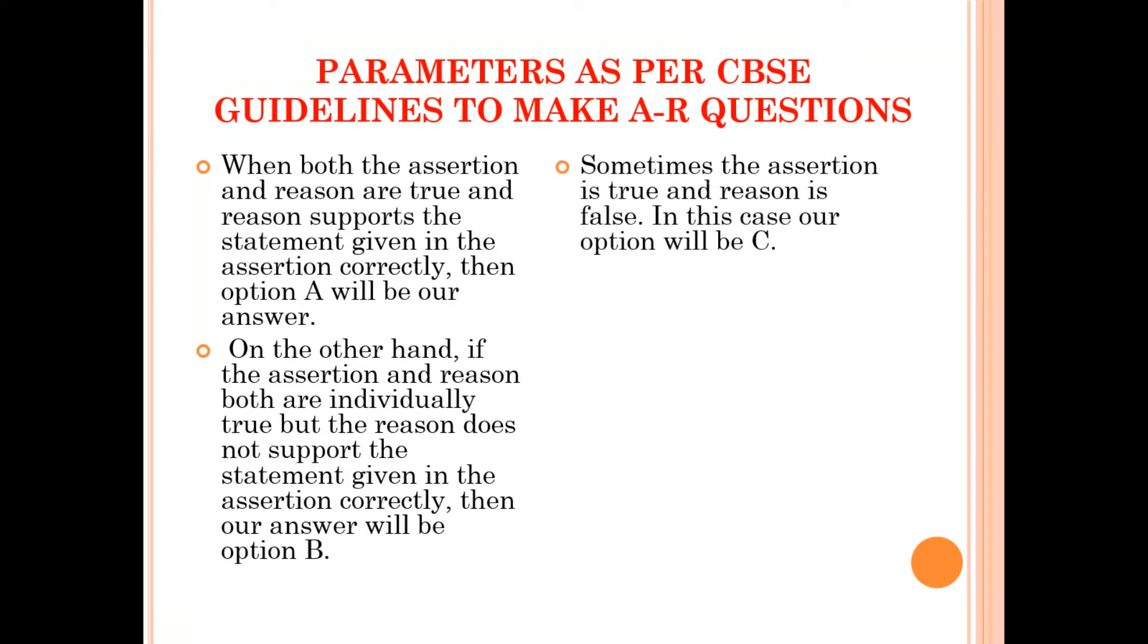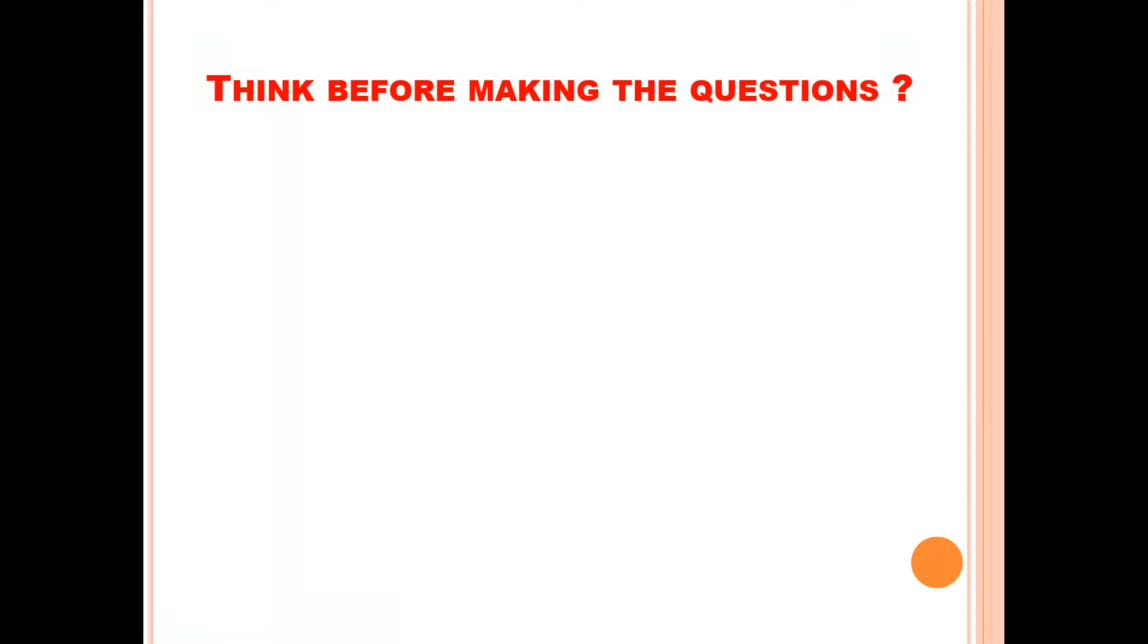Sometimes the assertion is true and reason is false. In this case the option will be C. In some cases, the assertion and reason both are false. In that case, option D will be the answer.